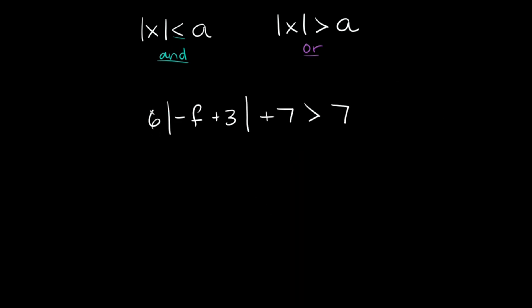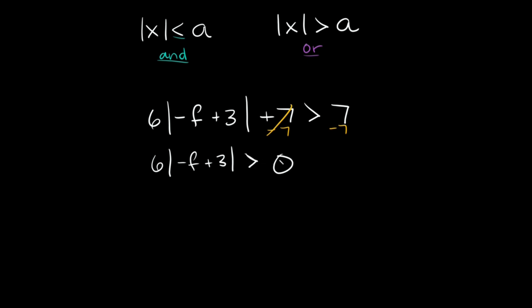The last example is a little tricky. We have 6 times the absolute value of negative f plus 3, plus 7, is greater than 7. First, isolate the absolute value bars by subtracting 7 from both sides — those cancel out — leaving 6 times |(-f + 3)| is greater than 0. This is fine because absolute values are always positive, and all positive numbers are bigger than 0. Then divide both sides by 6, giving |(-f + 3)| is greater than 0.